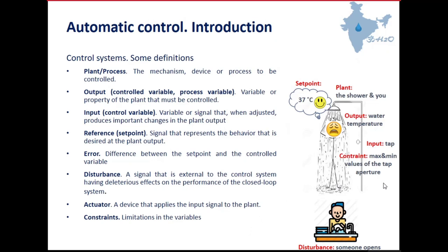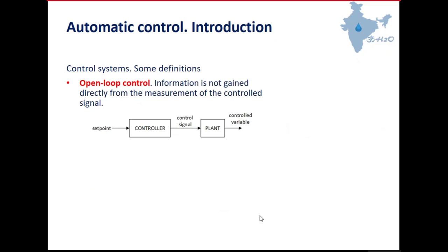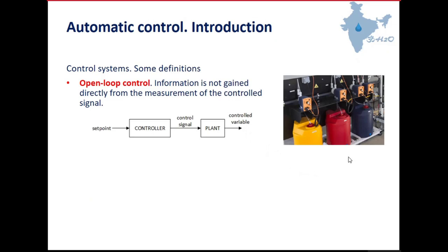Now let's see the difference between open loop control and closed loop control. In open loop control, information is not gained from the measurement of the control signal. We have our set point, our controller gives a control signal, and then we have our controlled variable. An example is dosifier pumps used in pre-treatment in water treatment plants, where you choose the quantity of doses to apply by changing buttons but you don't measure whether the flow is correct — you trust the dosifier pump. This is open loop control.